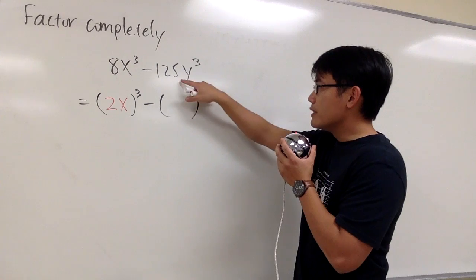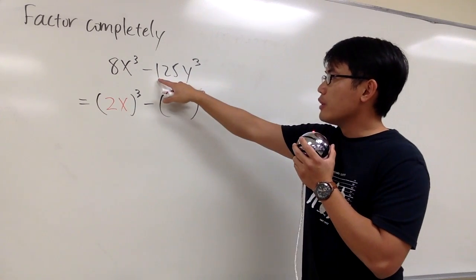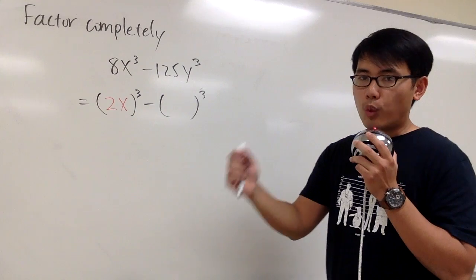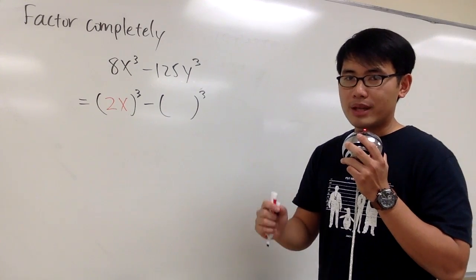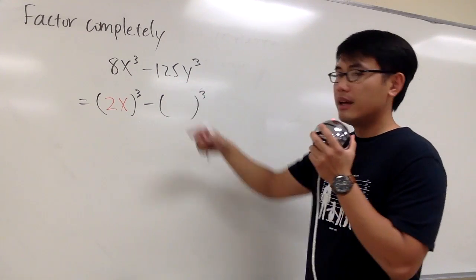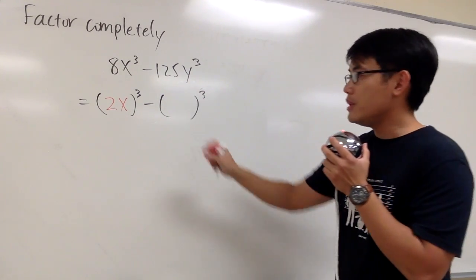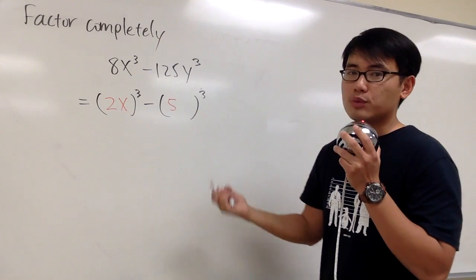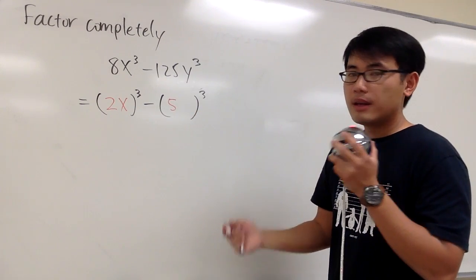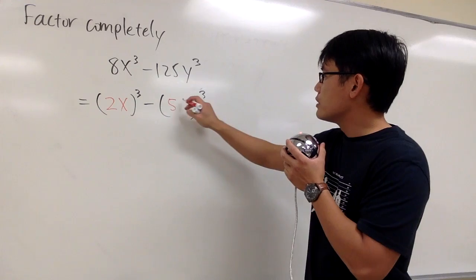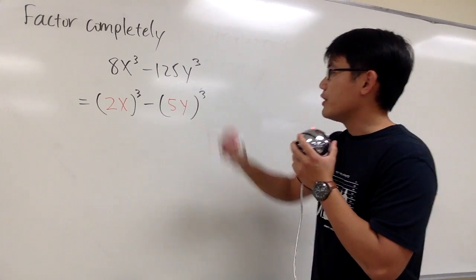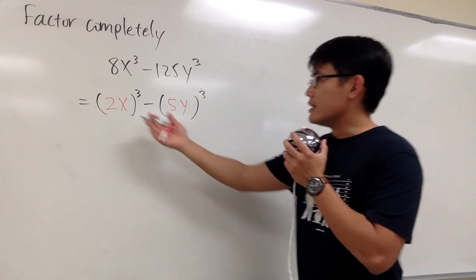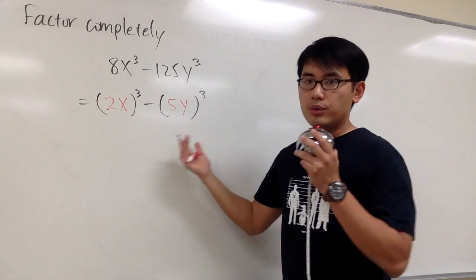And we'll do the same for the second one. Originally we have 125, and then we have to think about what times what times what will give us 125. And the answer for that will be 5 — 5 times 5 times 5 will give us 125. And then this is y to the third power, so we need to have a y right here. So this right here is the difference of two cubes.